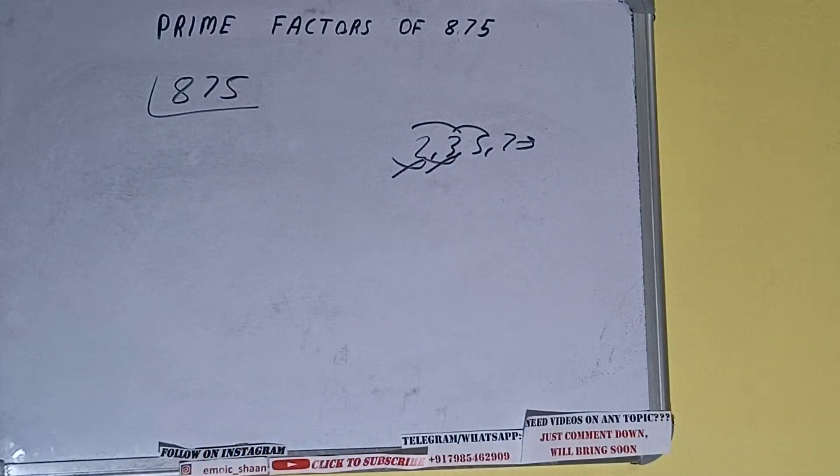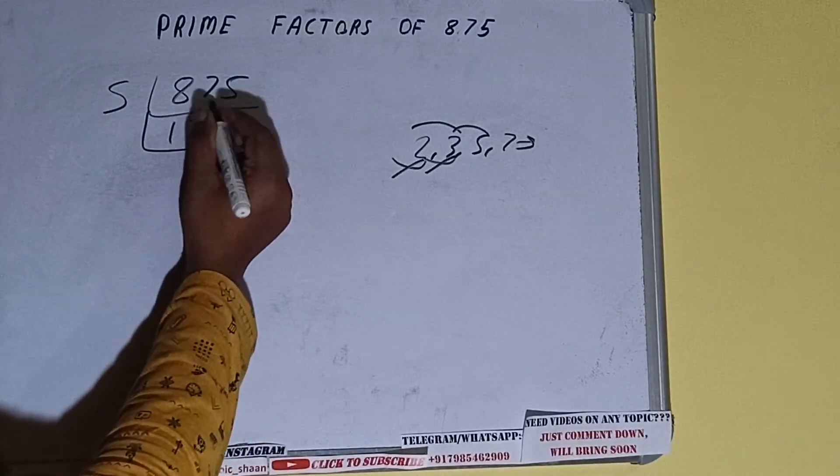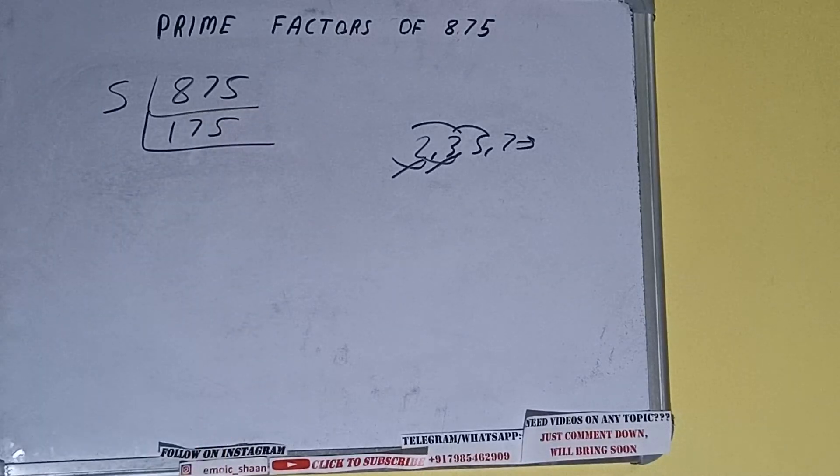So divide it and we'll be having 5 times 1 is 5, 8 minus 7, 5 times 7 is 35, 5 times 5 is 25, we'll be having 175. Is it again divisible by 5? Yes, it is, because the last digit is 5.